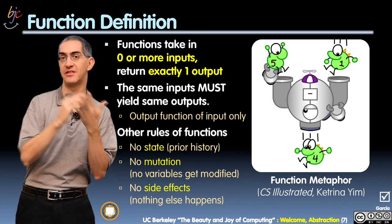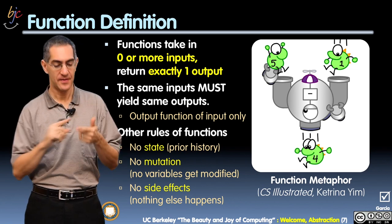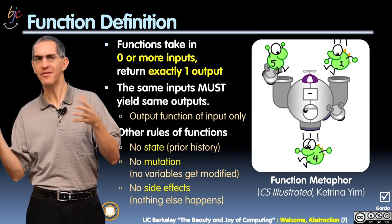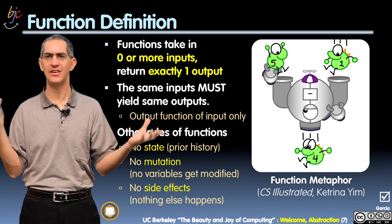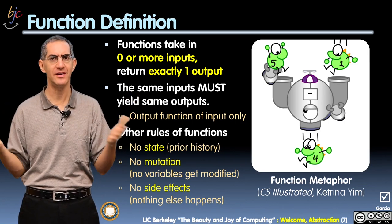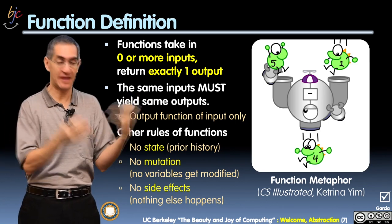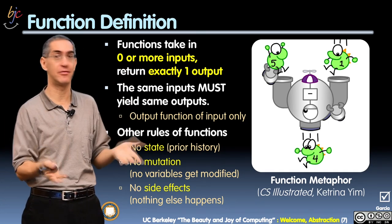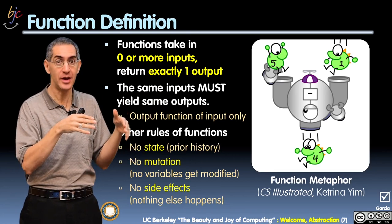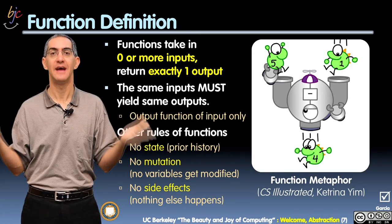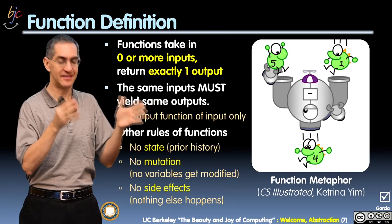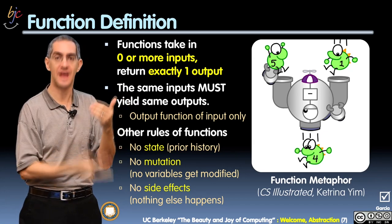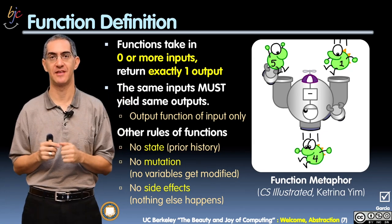There are three things a function doesn't do. First, the function has no state, which means whatever the past history of the world was — whatever the past history of that function was, what other inputs you've ever called it on — that never, ever affects the output. If the inputs haven't changed, the output is going to remain the same.